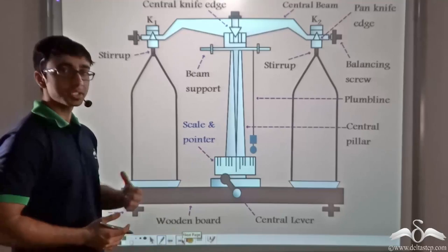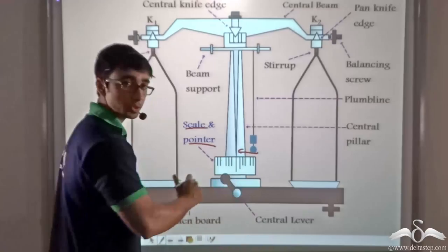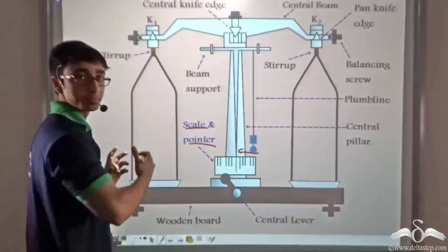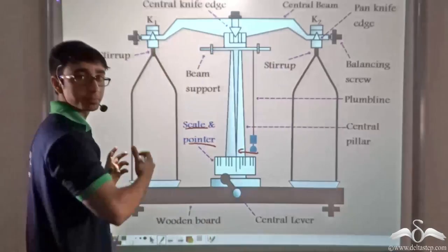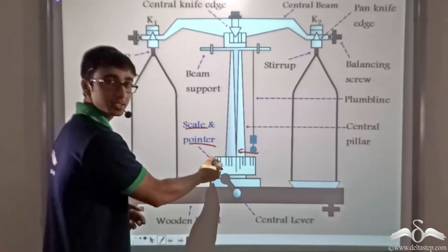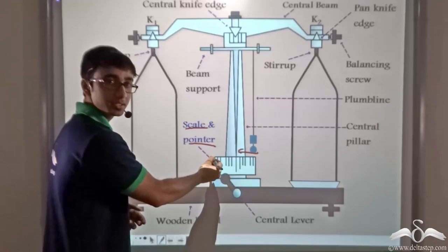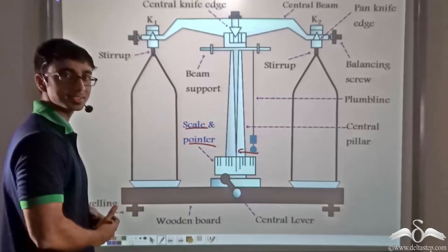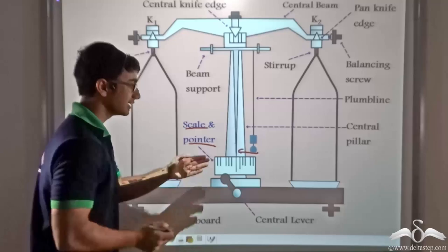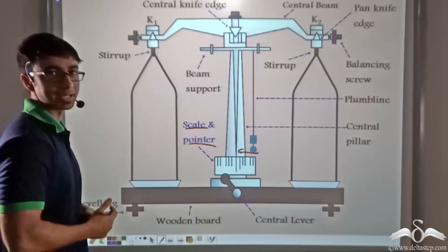Further we have a scale and pointer. If you look closely at the central pillar, you will find a knife edge. When the central lever is moved from its place, both pans on either end of the central beam rise up and swing for a while. When the oscillation of the knife edge is equal on both ends of the scale, it means the physical balance is balanced. If the oscillation is not equal on either end, it means the physical balance is not balanced.